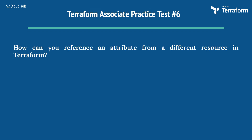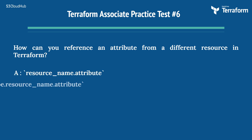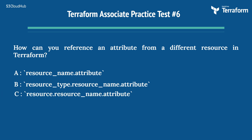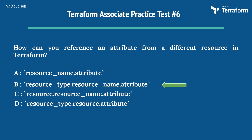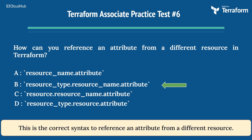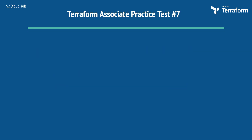The sixth question is: how can you reference an attribute from a different resource in Terraform? Option A: resource_name.attribute. Option B: resource_type.resource_name.attribute. Option C: resource.resource_name.attribute. Option D: resource_type.resource.attribute. The right answer is Option B: resource_type.resource_name.attribute. This is the correct syntax to reference an attribute from a different resource.